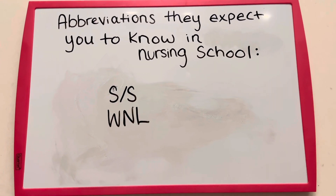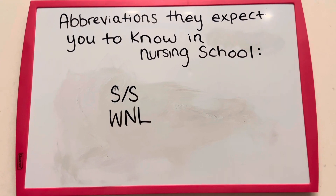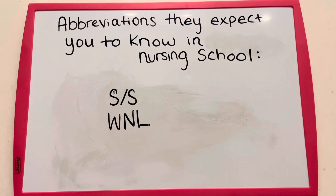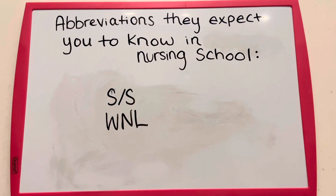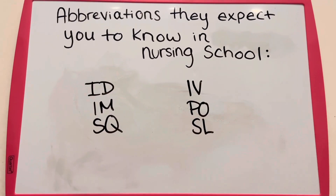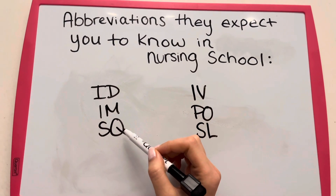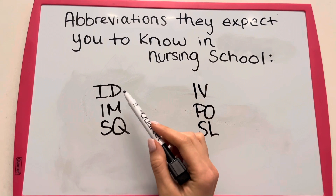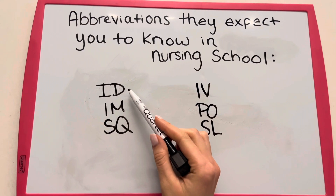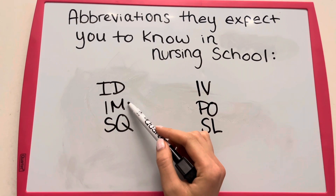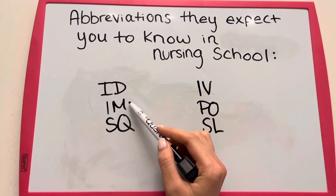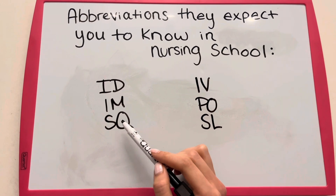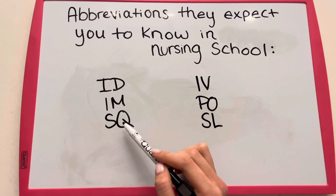For example, WNL — within normal limits — could be used to describe the patient's vital signs. These abbreviations describe different types of injections: ID stands for intradermal, IM is intramuscular, and SQ is subcutaneous.